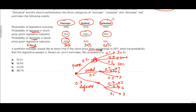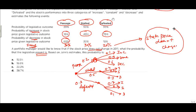We know with certainty that the stock price does not change. What is the probability that the legislation is passed? This is a Bayes' theorem problem because, given that the stock price is not changing, we could be in any of three scenarios — passed, stalled, or defeated — where the stock price remains the same.